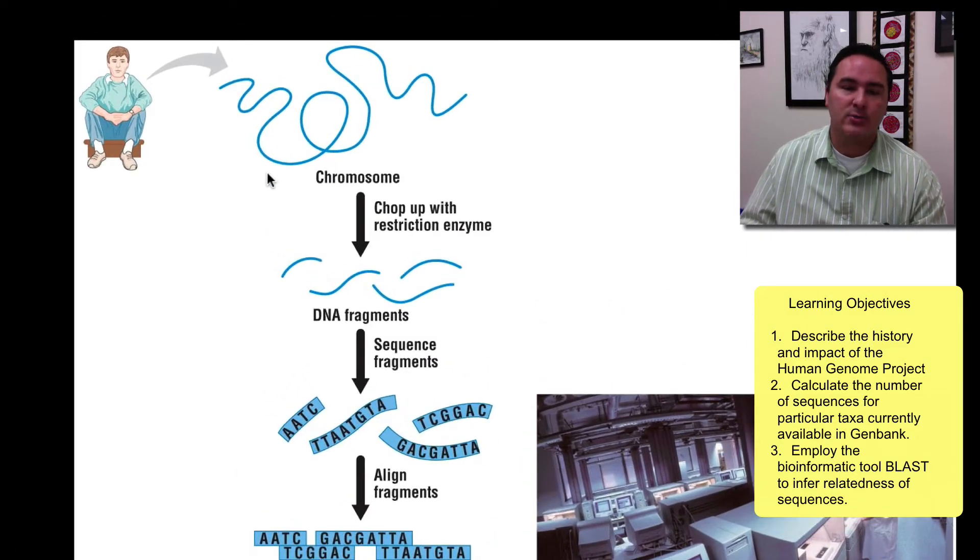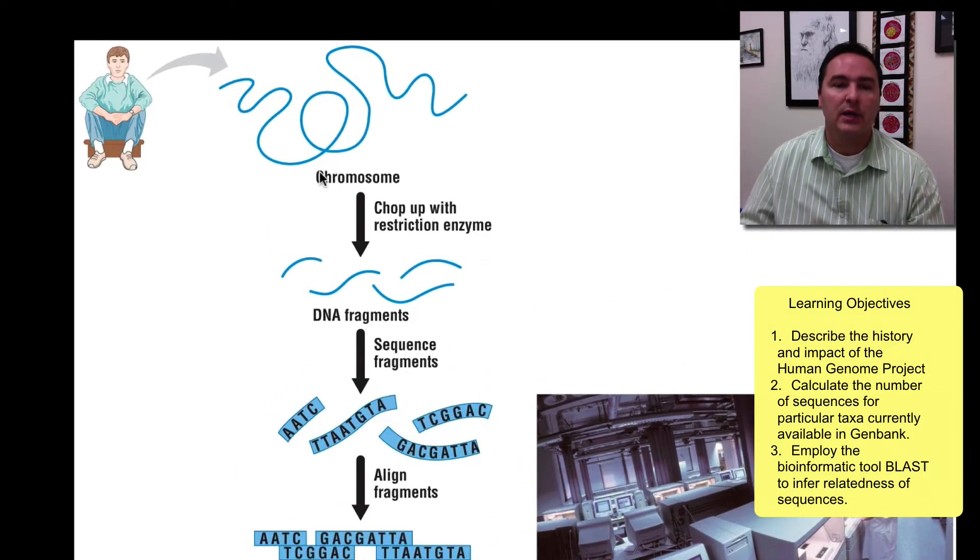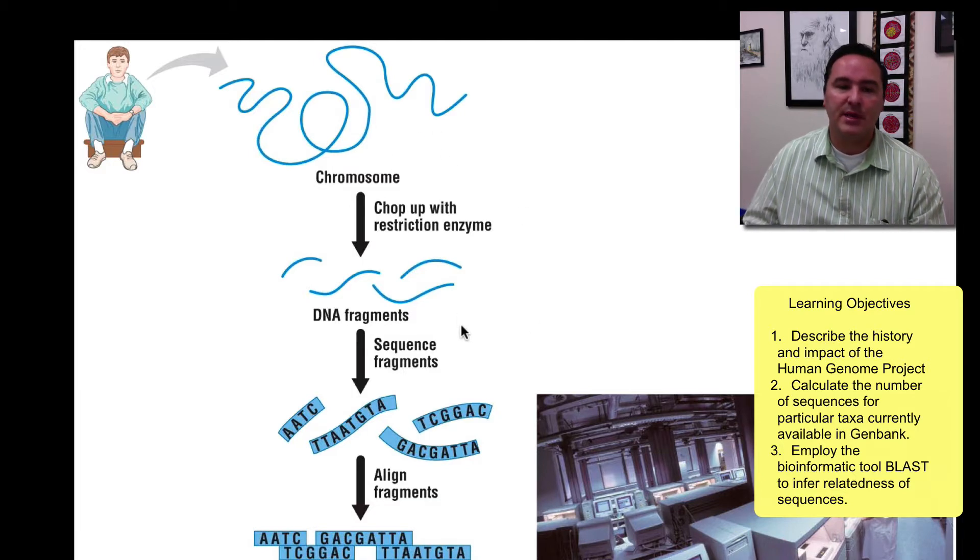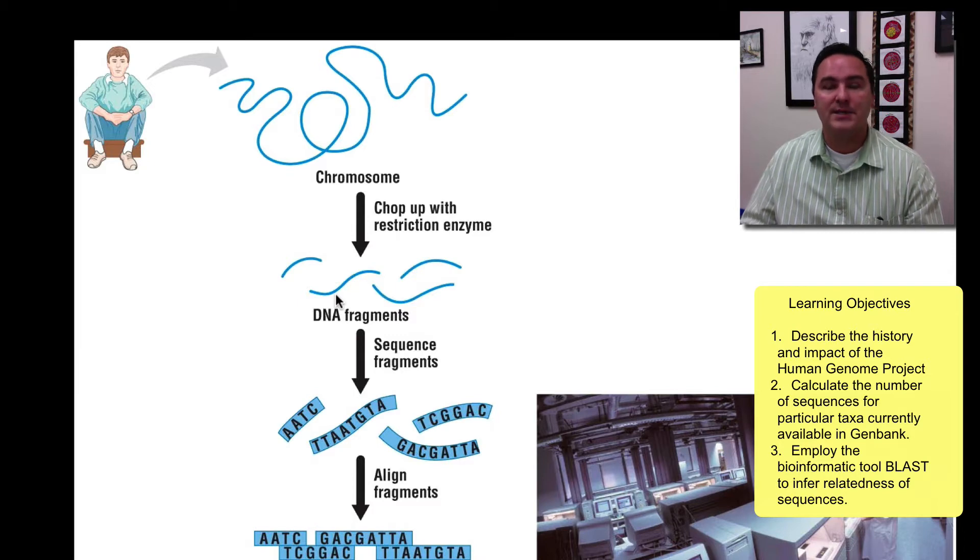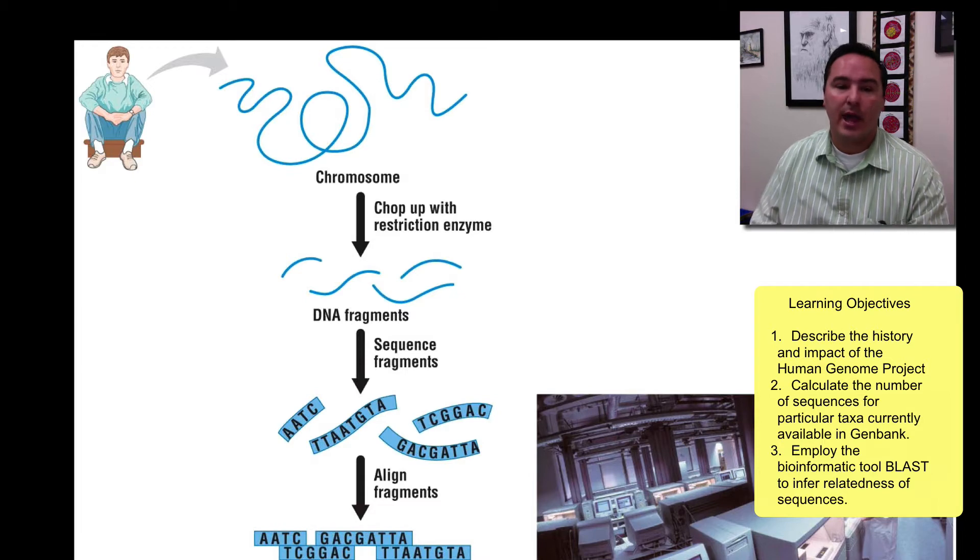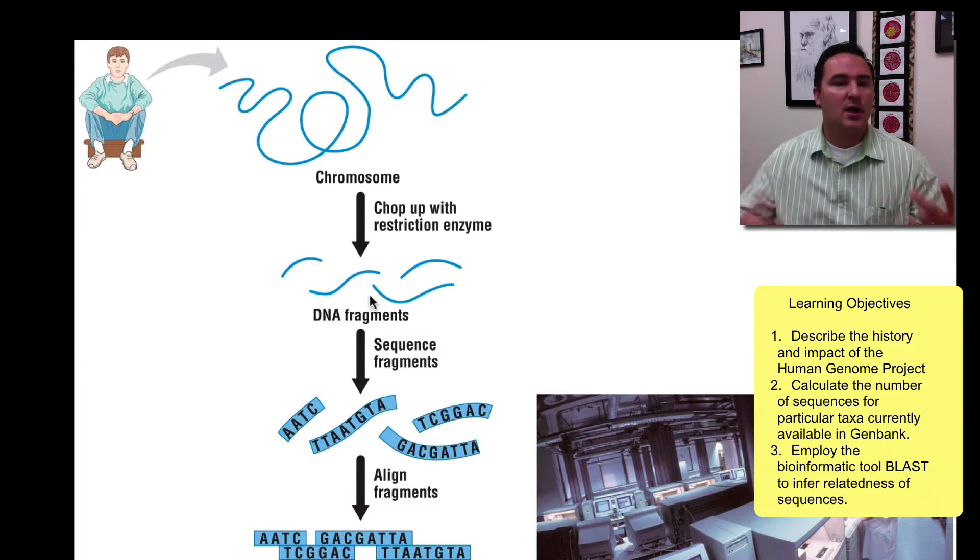One of the main ways in which the Human Genome was originally sequenced was through a process where you took chromosomes, you chopped them up into pieces, which were now DNA fragments, and then you went through a process that involved both PCR, preliminary chain reaction, which we talked about before, and sequencing, DNA sequencing, in order to actually read the genetic code of each of these pieces.